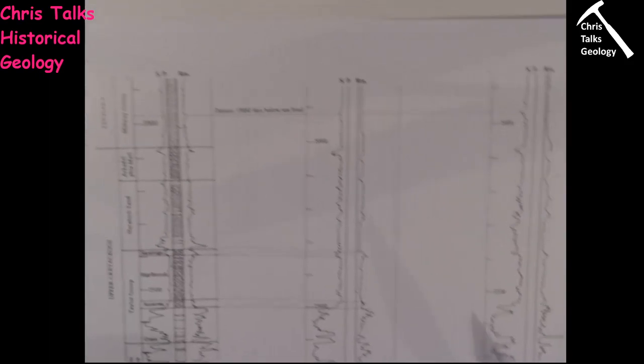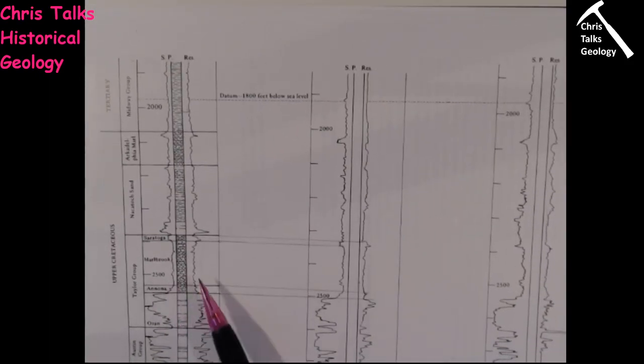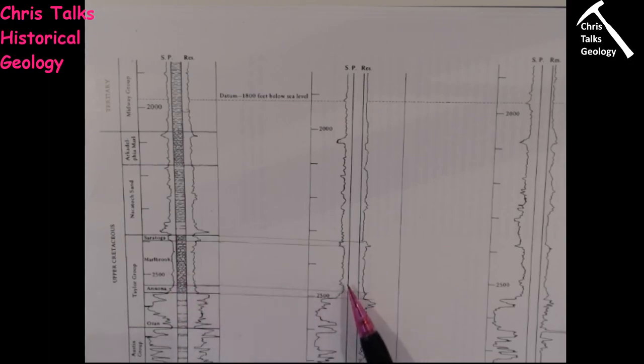So the task is: using spontaneous potential and resistivity data, join the left-hand column to the central column, and the central column to the right-hand column.